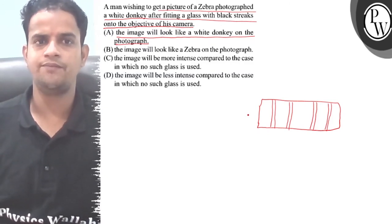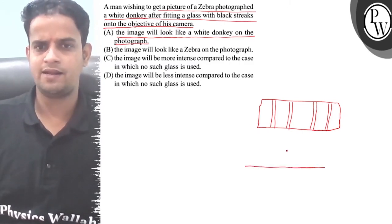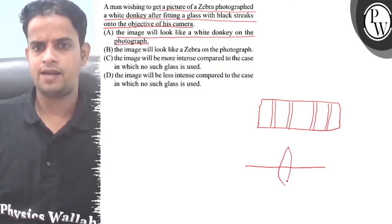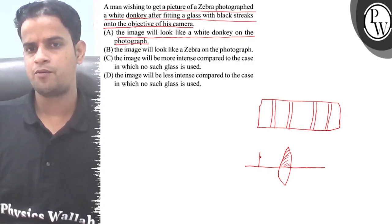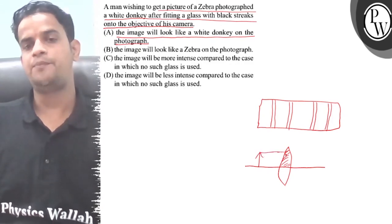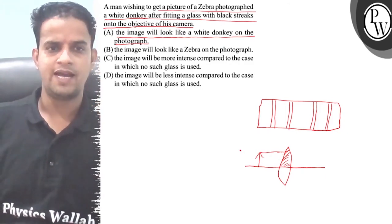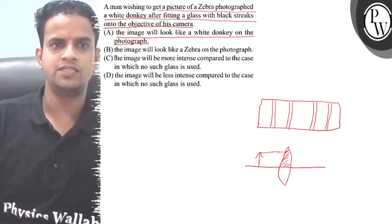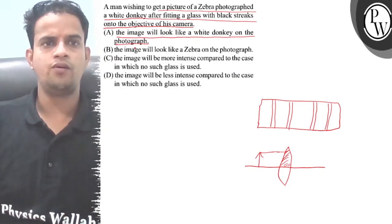Just consider the range — the intensity of the range is lower. Suppose that I have a glass, I have a lens on the side. If I have an object, then the object is so, but the intensity is lower. In this situation, the image will look like a white donkey on the photograph.